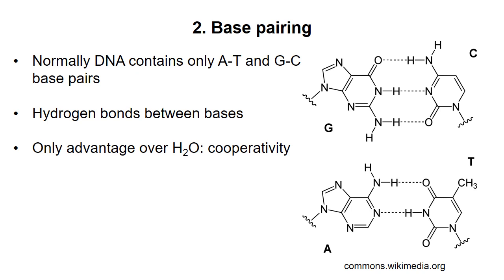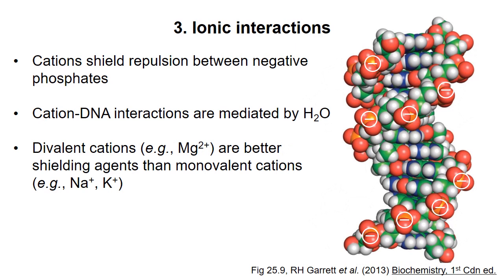The second type of interaction is base pairing. In DNA, G always base pairs with C, A always base pairs with T, and vice versa. The bases form hydrogen bonds with each other, which holds them together. Shown here are the standard base pairing configurations first predicted by Watson and Crick, with two hydrogen bonds between A and T, and three between G and C. Note that the bases could form hydrogen bonds with water that individually would be about the same strength, but there is an advantage to forming multiple hydrogen bonds between the same two molecules — the advantage of cooperativity.